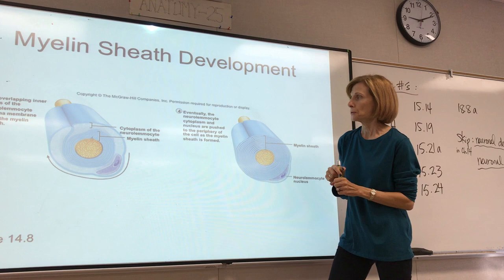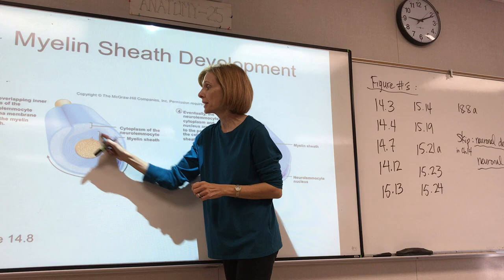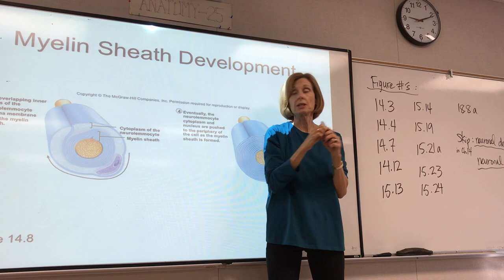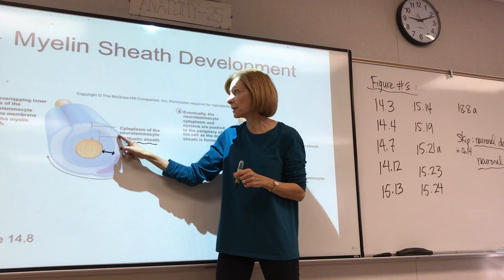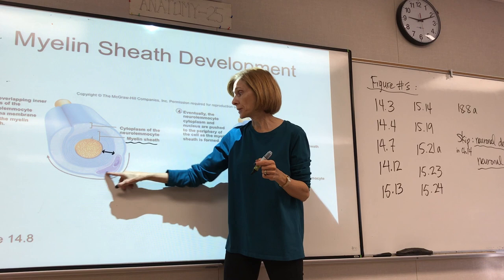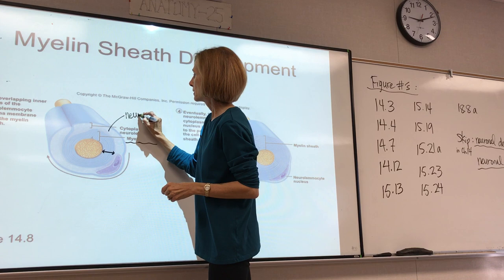There are different parts of the Schwann cell here. Where the membrane is wrapping around the axon many times, that is the actual myelin sheath. Anything left over outside of that — where we'd have some leftover cytoplasm of the Schwann cell along with its nucleus — that is called the neurolimma.